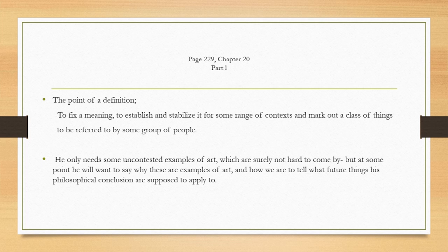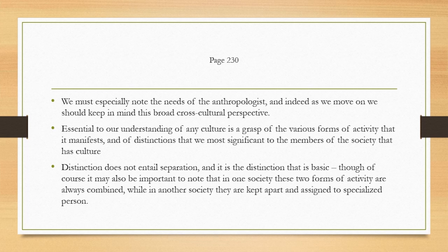The philosopher has uncontested examples of art, which are not hard to come by, but at some point he will want to say why these are examples of art and how to tell what further things his philosophical conclusions apply to. For example, should the dance historian deal with parrots and performing bears? Should the architecture historian deal with igloos and McDonald's? If so, why, and if not, why not? To answer such questions requires a defensible definition. We must especially note the needs of the anthropologist, and keep in mind this broad cross-cultural perspective.